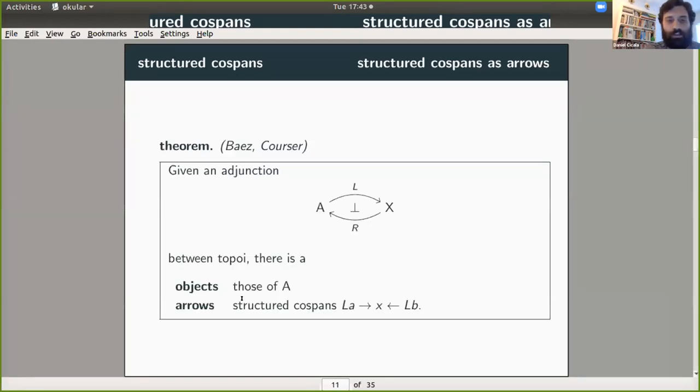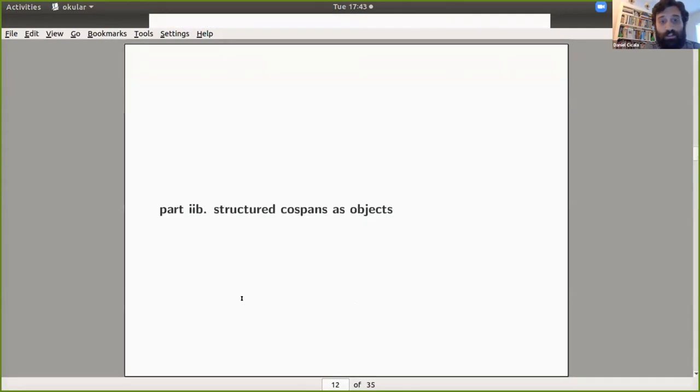And so Baez and Courser, they cooked up a category of these things where the objects of this category are those of A, that is the interface types. And the arrows are the structured cospans and composition, of course, is using pushout. Now, when they initially defined these, they didn't have exactly this setup because they weren't thinking about rewriting. I am thinking about rewriting, so that's why I've made a few modifications to their setup.